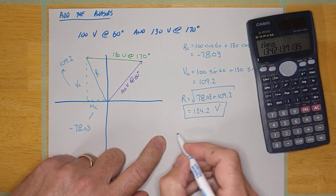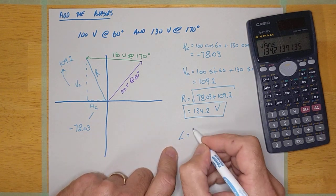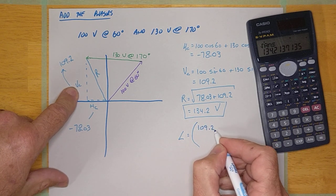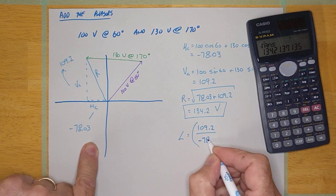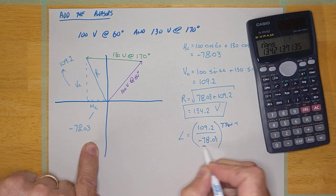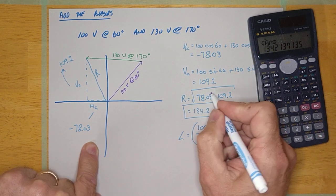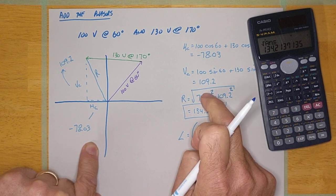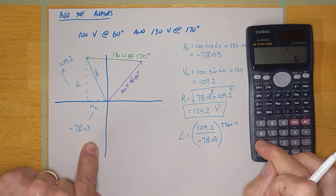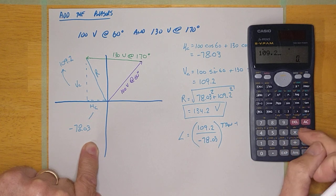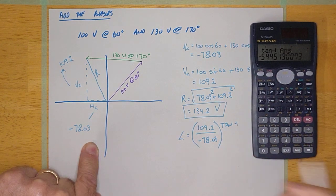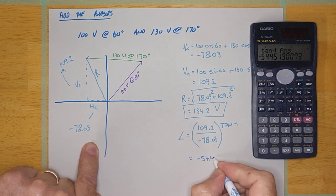One more thing to calculate, and that is the angle. The angle is the opposite over the adjacent inverse tan. The vertical component will always be the opposite. The horizontal component will always be the adjacent. Shift tan. Now, notice now that I did put the negative sign in there. When you're doing inverse tangent, leave it in. 109.2 divided by minus 78.03 equals shift tan equals. It says the angle is minus 54.45 degrees.